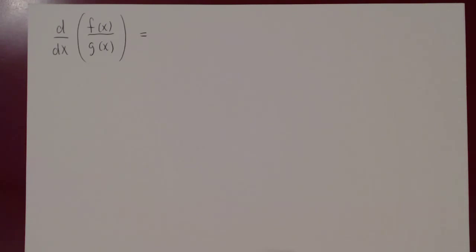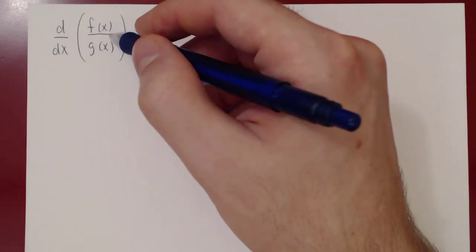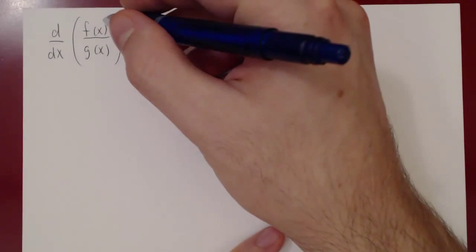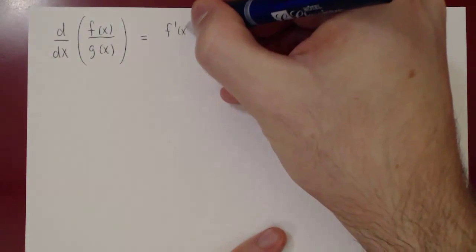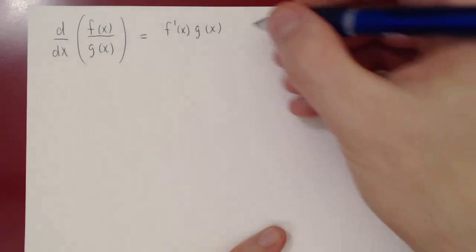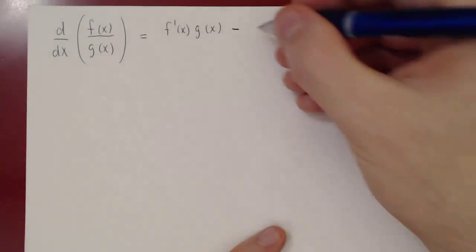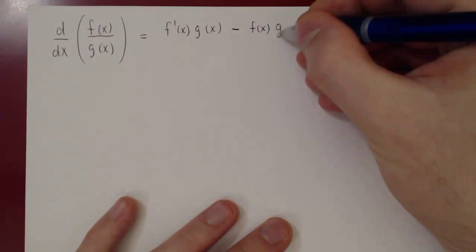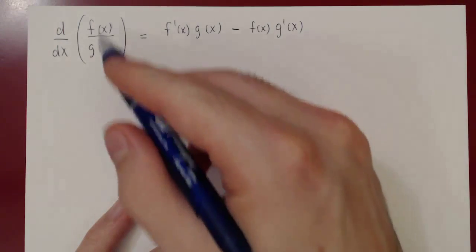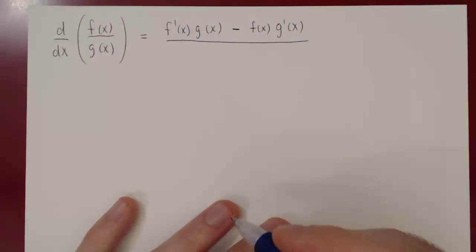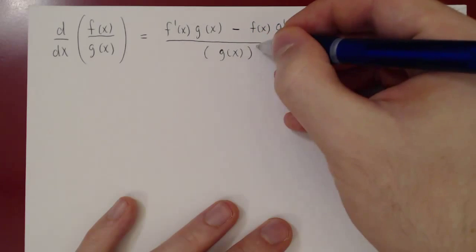The quotient rule shares part of the product rule. The derivative of f over g will be: the derivative of the numerator f prime(x) times the denominator g, minus the numerator f times the derivative of the denominator g prime, all over g(x) squared.